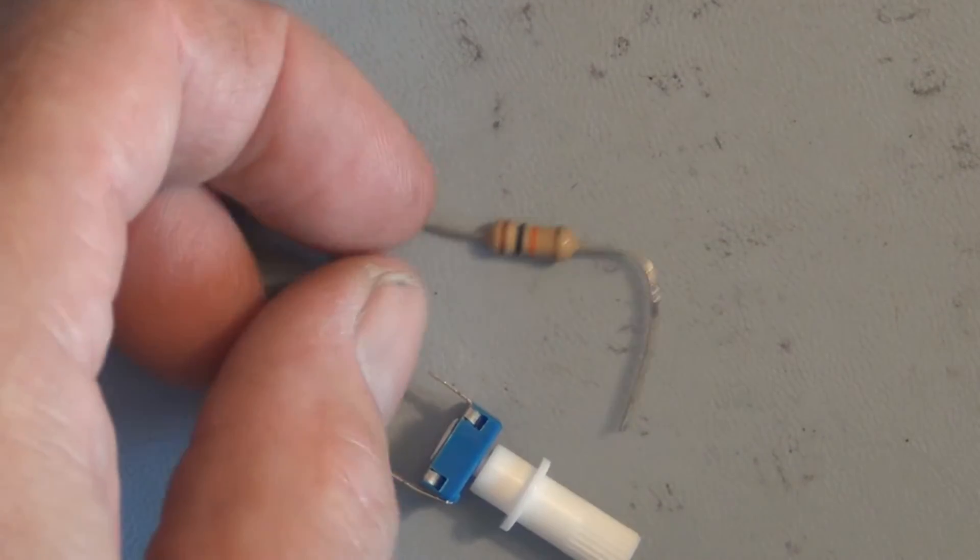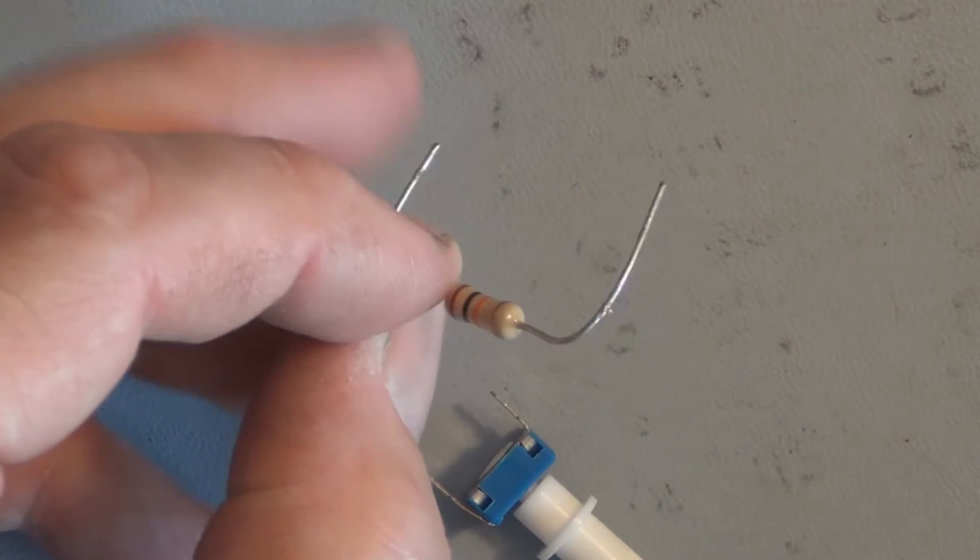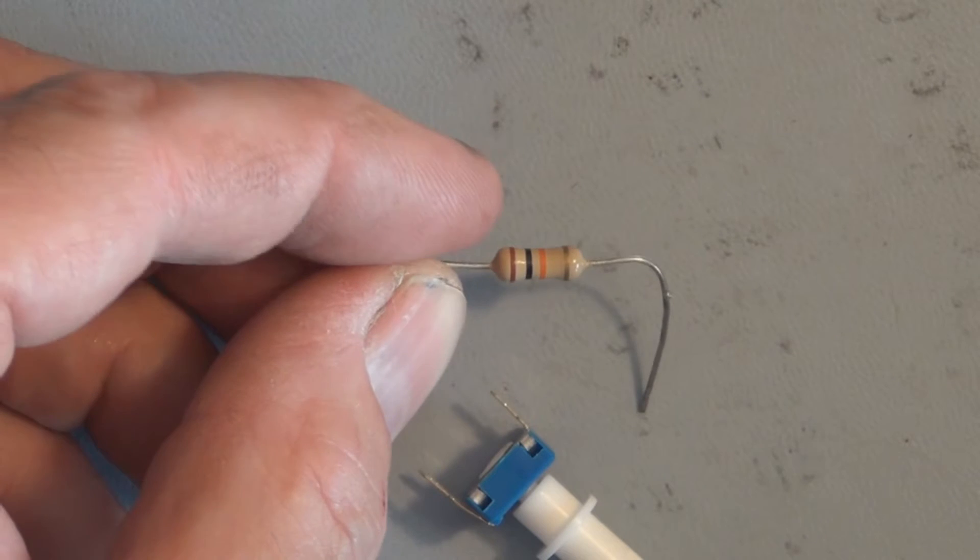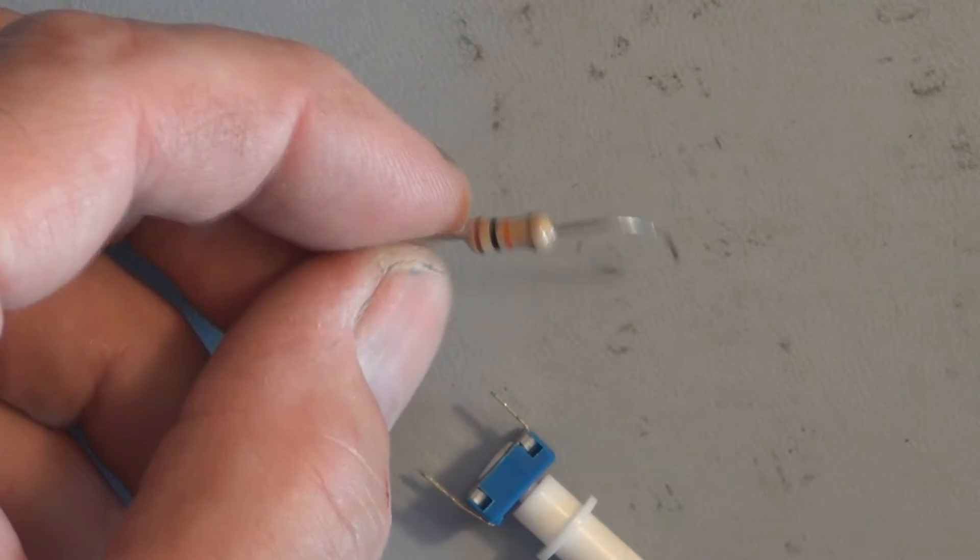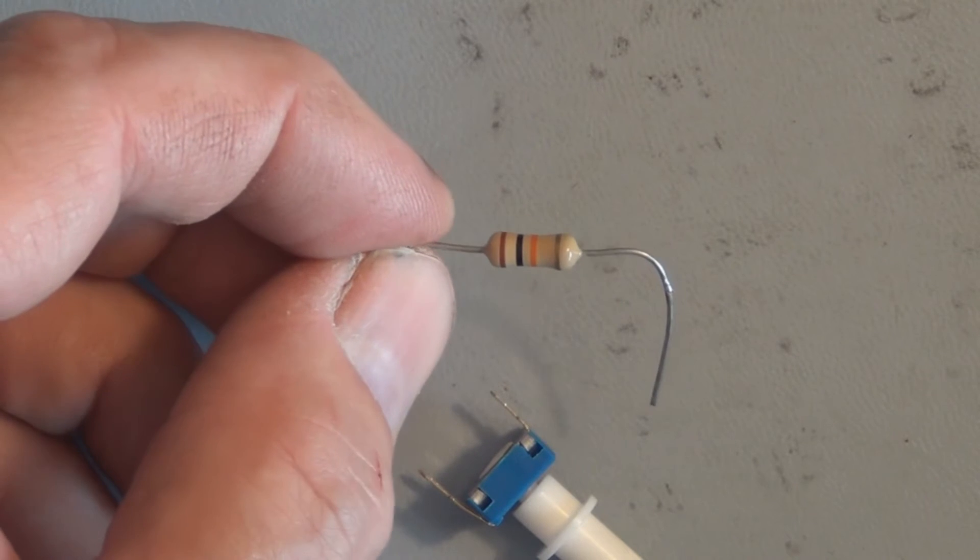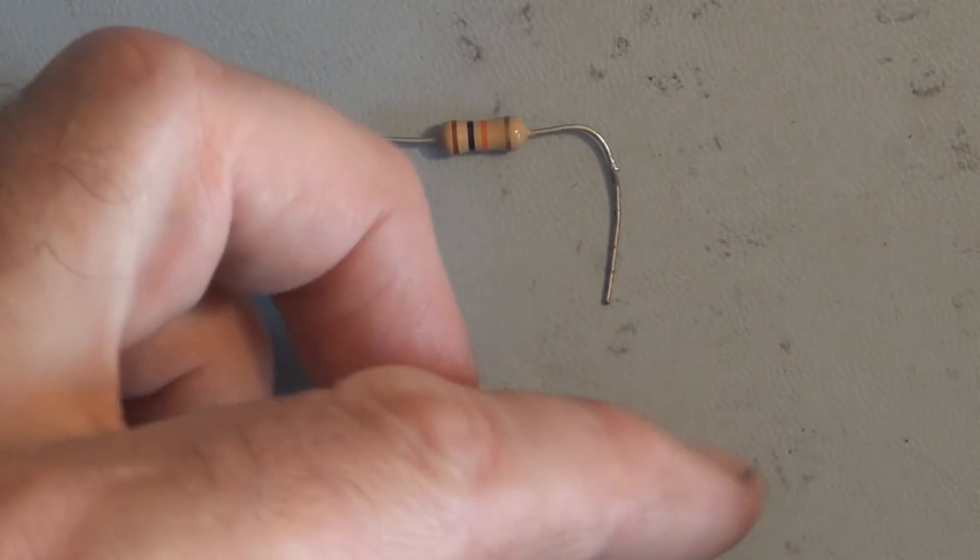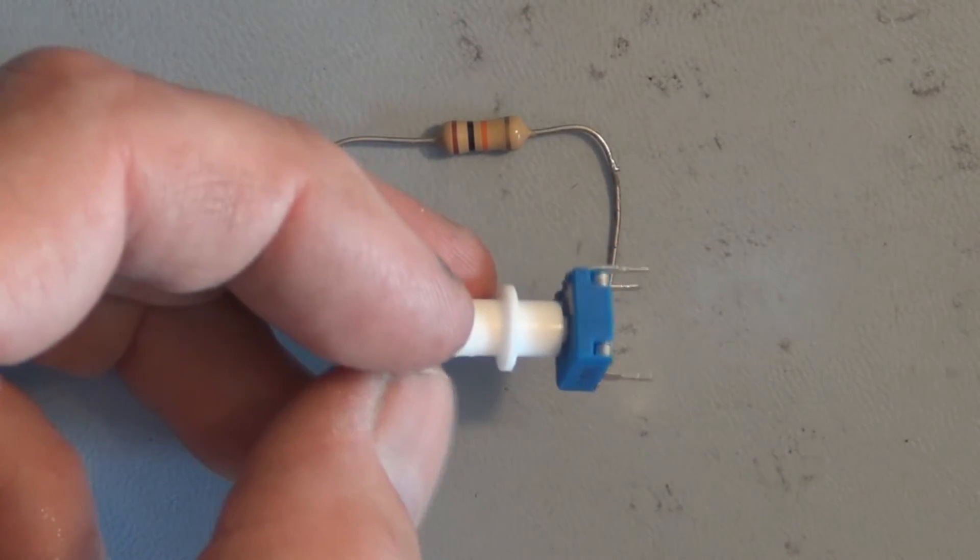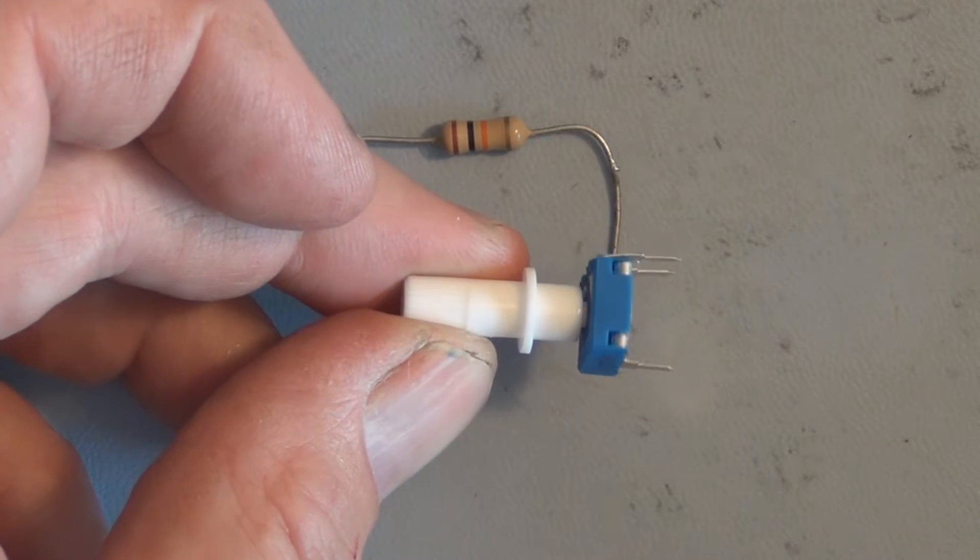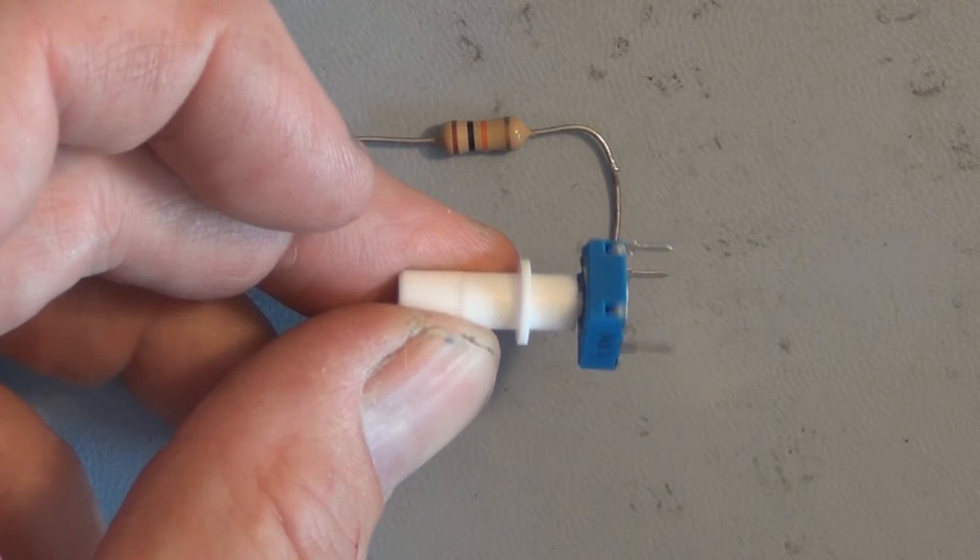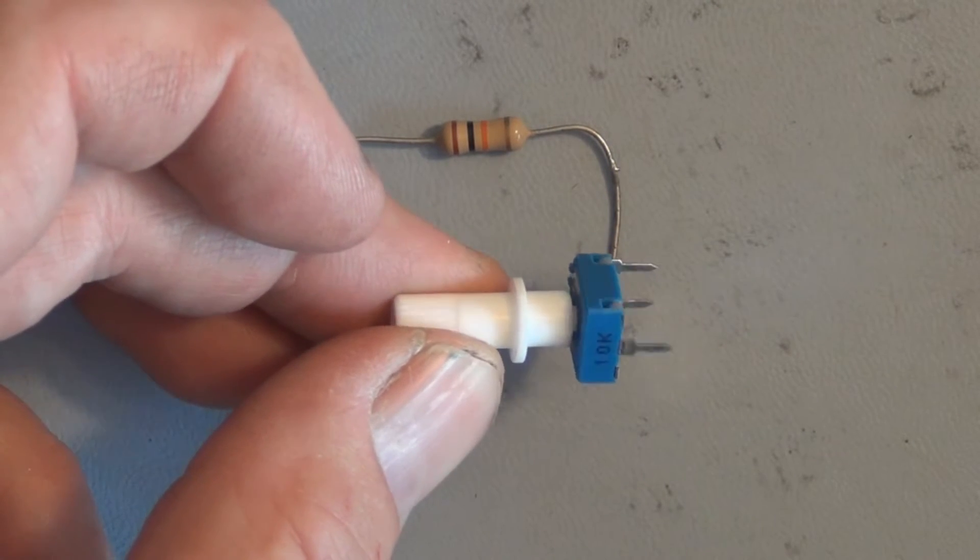This resistor here is a fixed resistor. It has two leads and in between those leads there's a resistive material that resists the flow of current. This particular resistor is a 10,000 or 10k ohm resistor and this is also a 10k resistor but it's variable, so you can vary the resistance of this from 0 to 10k or 10,000 ohms.